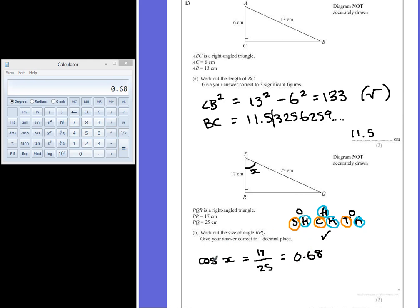So if the cosine of x is 0.68, we can find x by finding the inverse of this, which is probably shown as cosine with a negative 1 above it.